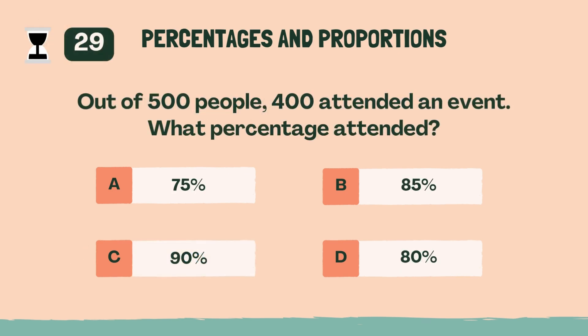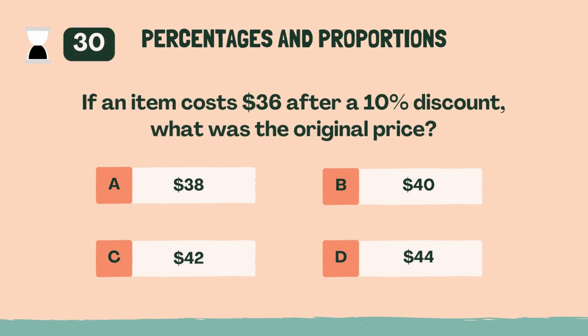Out of 500 people, 400 attended an event. What percentage attended? D, 80%. If an item costs $36 after a 10% discount, what was the original price? B, $40.